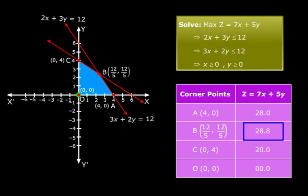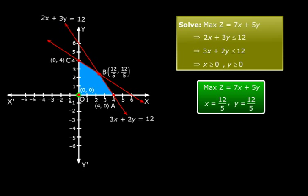That's 28.8. And what are the coordinates of the corresponding corner point? They are (12/5, 12/5). This means that the value of z is maximum at point B (12/5, 12/5). So the solution of this linear programming problem is x equals 12/5 and y equals 12/5.